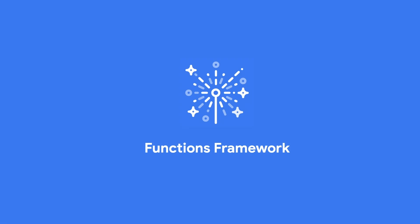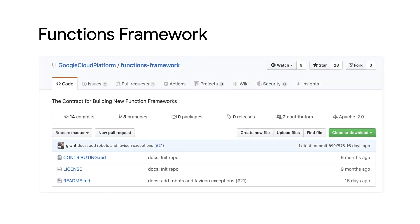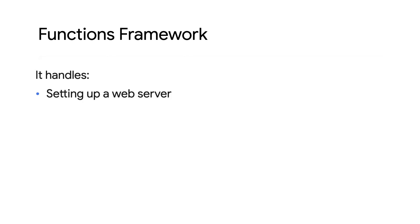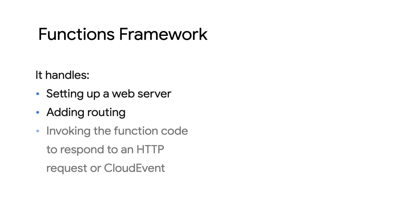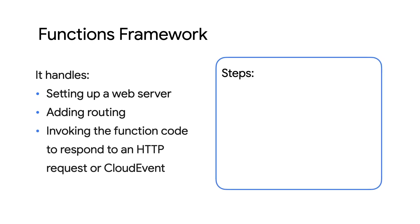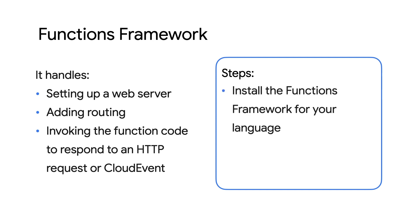We've now open-sourced a framework that powers Google Cloud Functions, called the Functions Framework. It's a set of open-source libraries that minimizes the amount of boilerplate and configuration needed from you to create a runnable stateless container. This framework is a dependency that's used in Cloud Functions, so you'll get the exact same core runtime environment and behavior. It handles setting up a web server, adding routing to the server, and invoking function code in response to an HTTP request or a Cloud event.